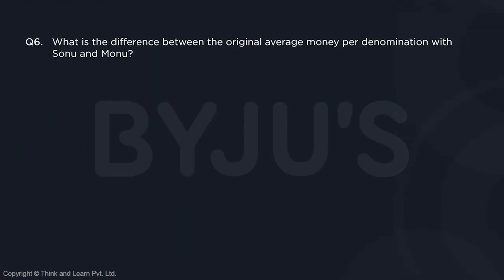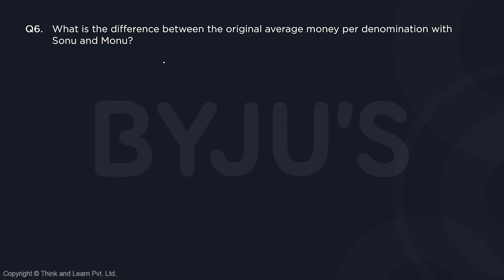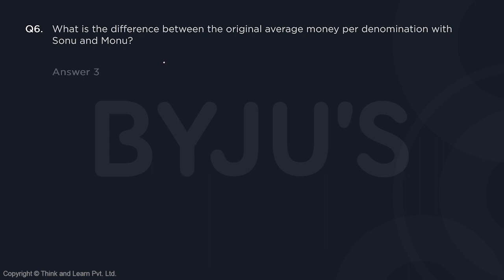Let us have a look at the questions. Question 6 asks: what is the difference between the original average money per denomination with Sonu and Monu? The original average with Sonu was A and with Monu it was B. We just saw the difference between them was 3. So A minus B is minus 3, or B minus A equals 3 — the difference is 3. The right answer for question number 6 is 3.